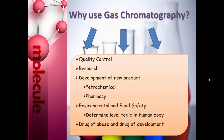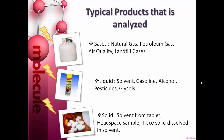So why use gas chromatography? It is mainly used for quality control, research and development, and environmental and food safety. For example, it is used in environmental and food safety as a way to determine if a sample or a finished product is safe for human consumption.